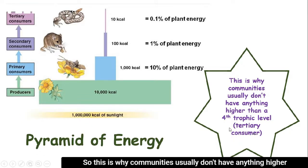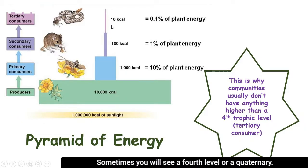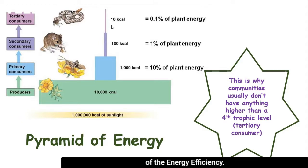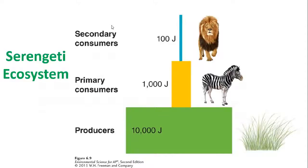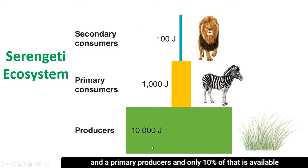This is why communities usually don't have anything higher than a fourth trophic level. There's not enough energy to support anything really higher than a tertiary consumer. Sometimes you will see a fourth level or quaternary consumer — a fifth trophic level — but that's not as common because of energy efficiency. The same thing can be seen in the Serengeti ecosystem, a savanna-like ecosystem in Africa, where lots of energy is in the primary producers and only 10% is passed on to the next trophic level.